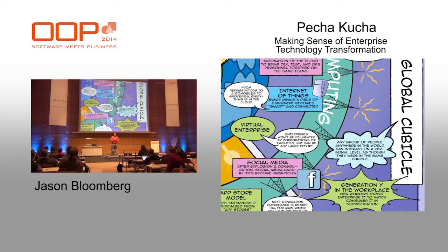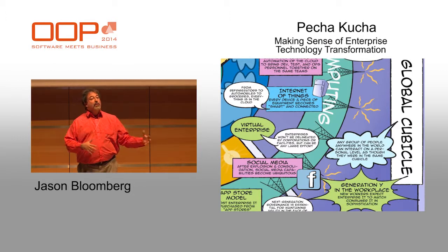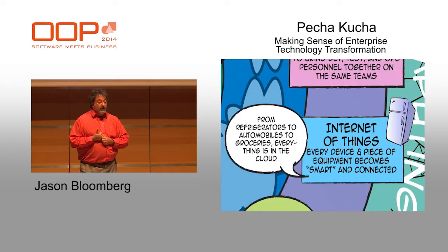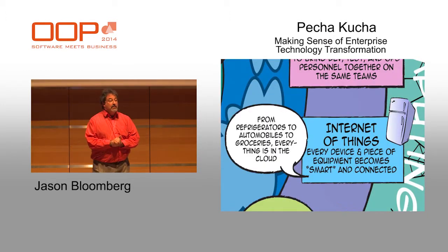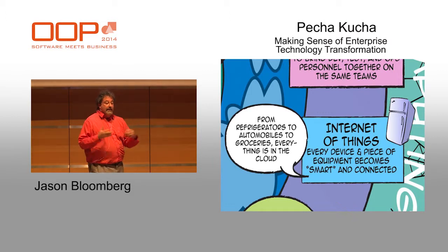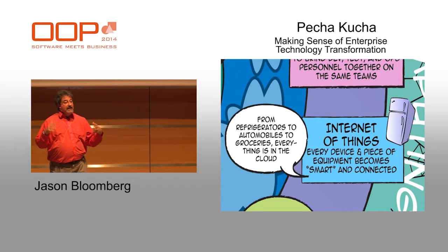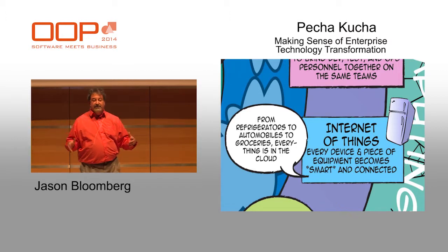The lower right-hand quadrant is the global cubicle. This notion of location independence is impacting how organizations deal with their personnel — it doesn't matter where you are physically, whether in the same location or halfway around the world. Generation Y, people in their 20s, expect this from their organizations. The Internet of Things is also part of the story — not just physical devices interacting with servers, but devices interacting with each other — providing enormous forces of change, particularly around security implications.